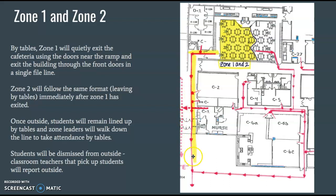It's important to stay in line with your table because once you get outside, your zone leader will walk down that line of students and take attendance by table. They have attendance sheets that are listed by table. From there, we will dismiss students back to their classes from outside. If you're a classroom teacher that picks up your class from the cafeteria, you'll want to meet those students outside.